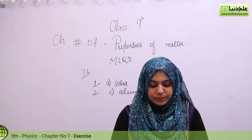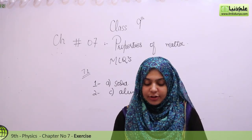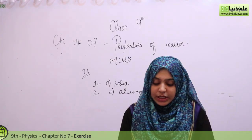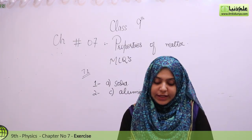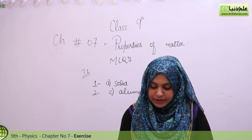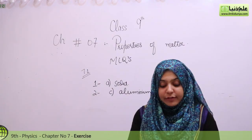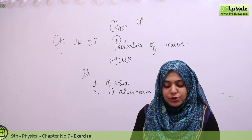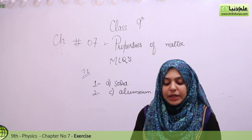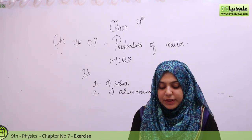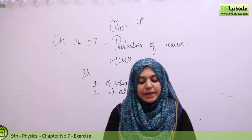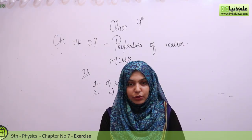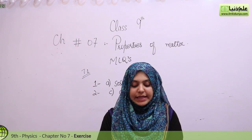Number 3: The SI unit of pressure is Pascal, which is equal to what? Option A is 10 to the power 4 Newton per meter square, Option B is 1 Newton per meter square, Option C is 10 to the power 2 Newton per meter square, and Option D is 10 to the power 3 Newton per meter square.